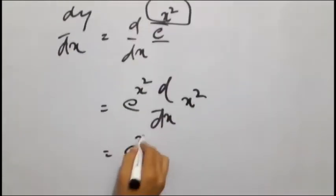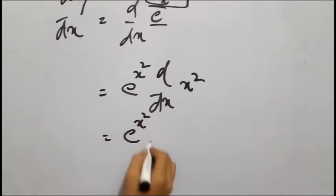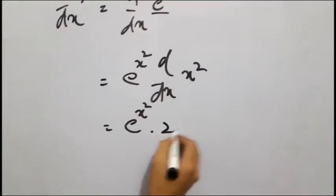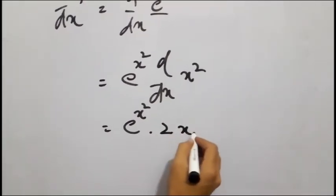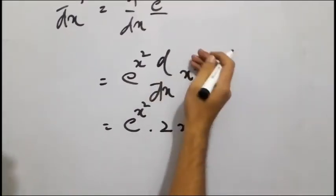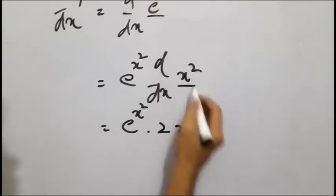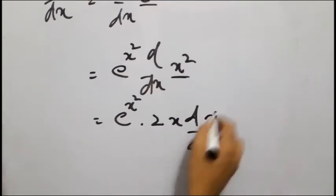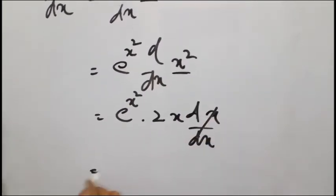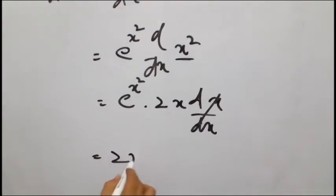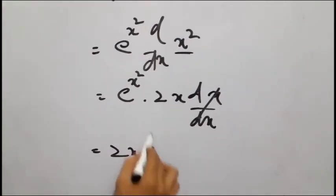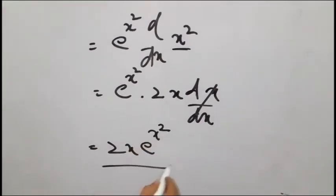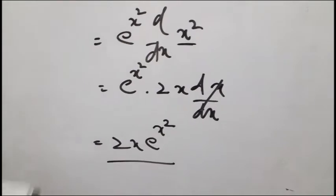e raised to power x square के साथ, x square का derivative लेंगे — power नीचे आएगी, power वैसे minus होगी। फिर power को हटा देंगे, variable का दुबारा से derivative लेंगे — dx — यह cancel होगा। तो हमारे पास इसका answer बन गया: 2x e raised to power x square। इस तरह से यह सवाल भी solve होता है।